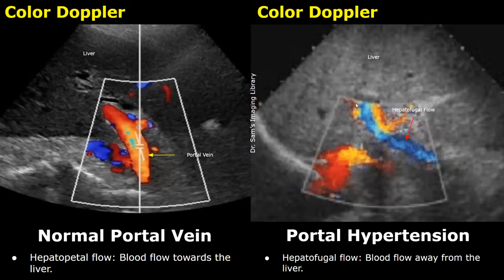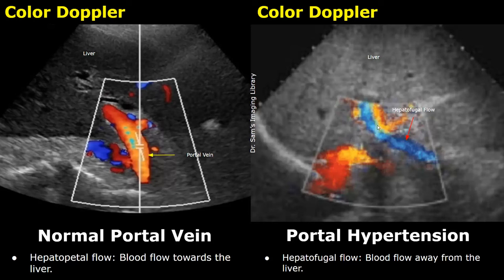This is a case of portal hypertension. In portal hypertension, the pressure within the portal vein increases due to increased resistance to blood flow. This can occur in conditions such as cirrhosis, where there is formation of scar tissue in the liver, which increases the resistance to blood flow in the portal veins.